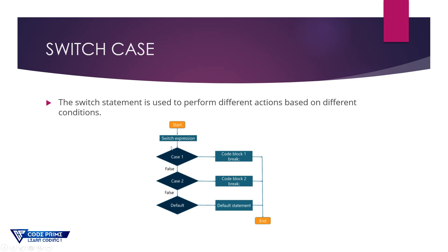As you can see on the flowchart, there is a switch expression and there will be some conditions. If the condition matches case 1, it will run code block 1. If it falls, it will be checked for case 2, and if it is still false, it will check the default. If case 2 is true, it will execute code block 2. If no case matches, the default condition will run and the execution ends.